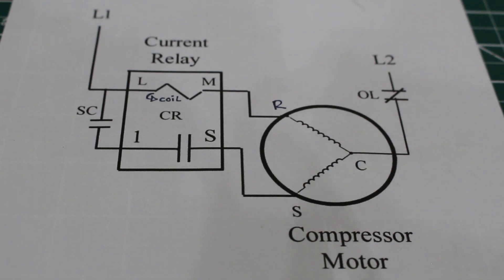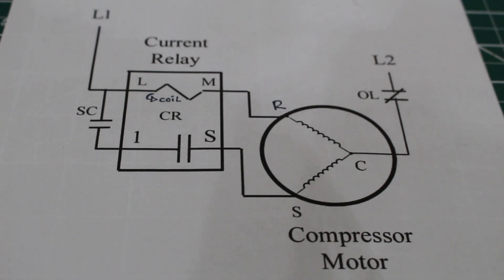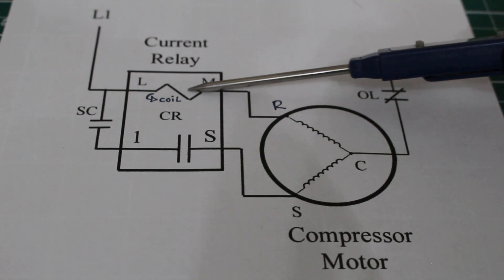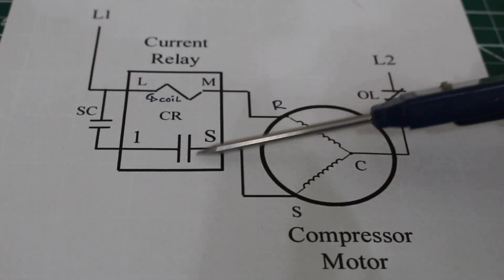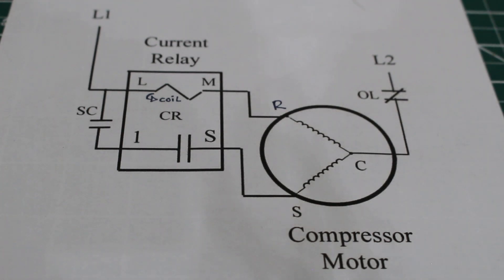Next we have a wiring diagram for our current relay. Inside is our current relay — this is going to be our coil. And of course we have our normally open contacts, opposed to our potential relay which had the normally closed contacts.